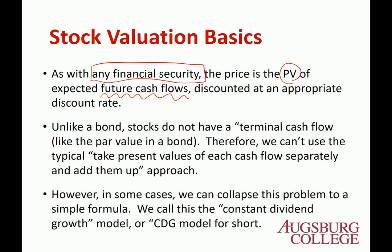So it's an infinite problem — they keep paying dividends forever. This is different from bonds, which have predetermined cash flows and a terminal value. For stocks, simply taking the present value of each cash flow separately and adding them up doesn't work since there's no terminal value. So we need to make some assumptions and mathematically solve the problem.